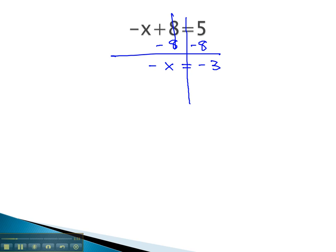But we don't want to know what negative x is. We just want to know what x is. Well, we remember that that's the same as having negative 1 times x. So to get rid of negative 1 times x, we have to divide by that number, divide by the entire number negative 1 on both sides. The negative 1's divide out. We're left with just the x is equal to negative 3 divided by negative 1, positive 3.